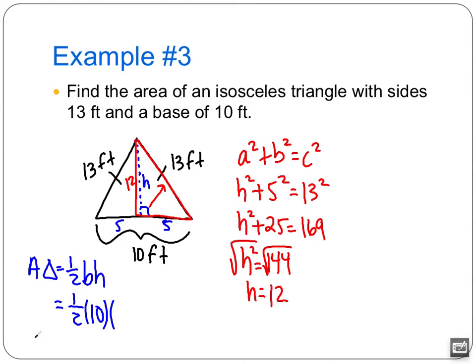Going back to our area, we now can substitute 12 in for the height. Half of 10 is 5. Multiply that by 12. And you get 60. So our area is 60 feet squared. Don't forget the units. Okay, so that was a little bit new, but that was just applying the Pythagorean theorem, which you guys already know.